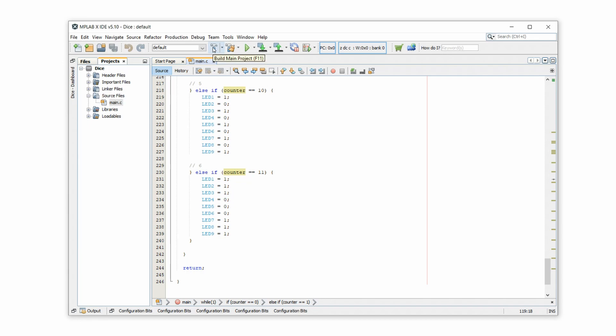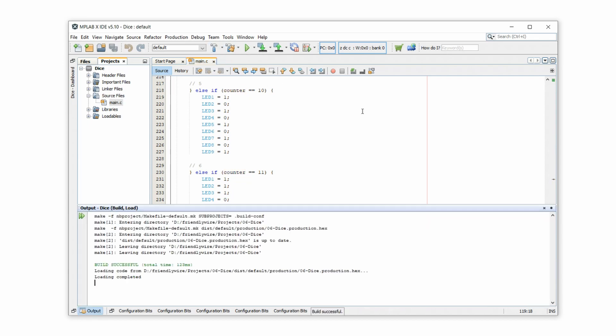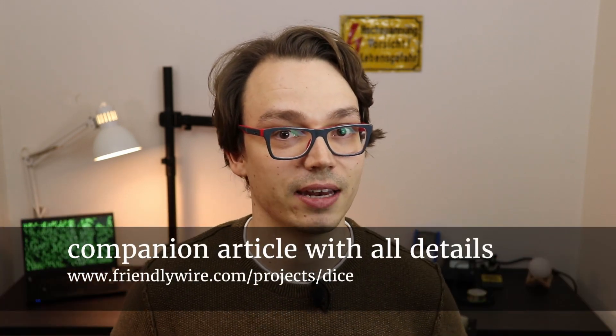Now we can compile the code by clicking on the hammer symbol up here, and obtain our hex file. If you're interested in the details of the software, I invite you to go to the companion article to this video on my website. I'll put the link in the description and down here as well. So now we have to take this hex file that contains the dice code and transfer it onto the pic. So let's do that next.